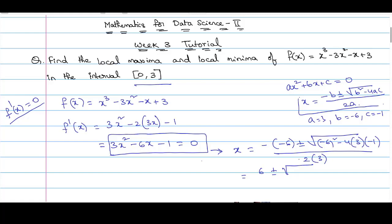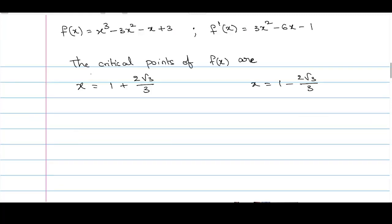This simplifies to (6 ± √48) / 6. Since 48 = 16·3, we can write √48 = 4√3. So we get (6 ± 4√3) / 6, which finally equals 1 ± (2√3)/3. These are the two critical points of f(x): x = 1 + (2√3)/3 and x = 1 - (2√3)/3.